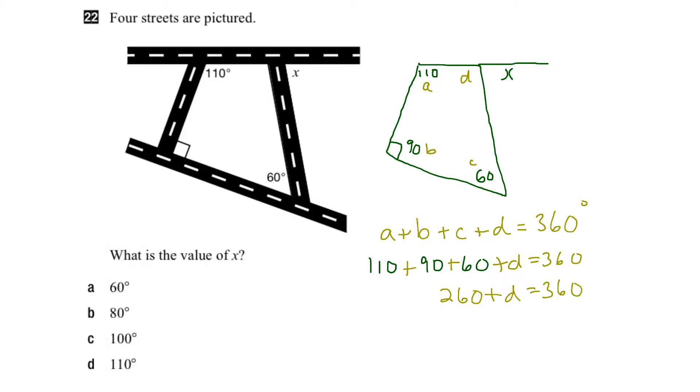Remove the 260 to isolate the D, so 260 minus 260 plus D equals 360 minus 260. The two sixties would cancel, and that would leave us with D equaling 100 degrees.